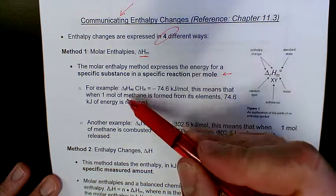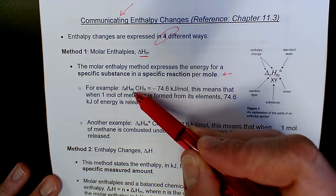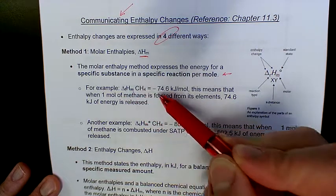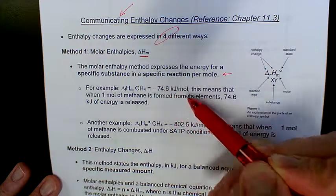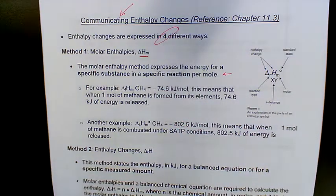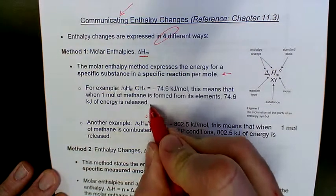So if we take a look at some examples, take a look at methane. If I want to form a mole of methane, then you can see that it gives off, due to the negative, 74.6 kilojoules for every mole of methane formed. So it means the formation of methane is an exothermic process, and it gives off a good chunk of energy, 74.6 kilojoules for every one mole of methane that you form.